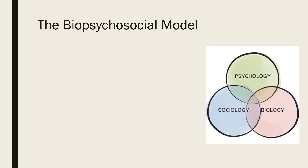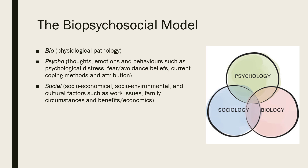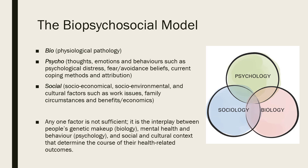The biopsychosocial model: bio for physiological pathology, psycho for psychological including thoughts, emotions and behaviours, and social for the social, environmental and cultural aspects such as work issues, family circumstances and socioeconomic status. Engel iterated that any one factor alone is not sufficient. It is the interplay between people's genetic makeup, mental health and behaviour and social and cultural context that determines the course of their health-related outcomes.